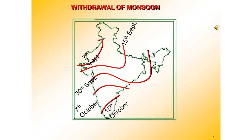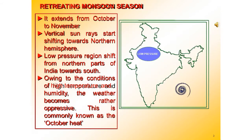Sometimes these cyclones arrive at the coast of Odisha, West Bengal and Bangladesh. The bulk of rainfall of the Coromandal coast is derived from the depressions and cyclones.